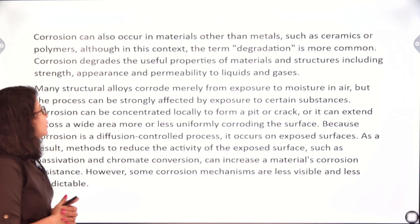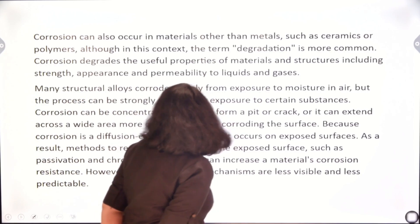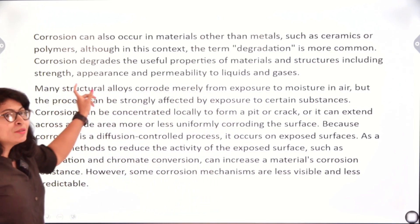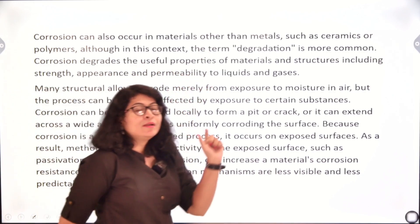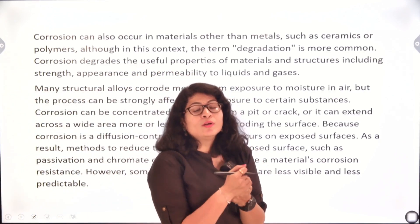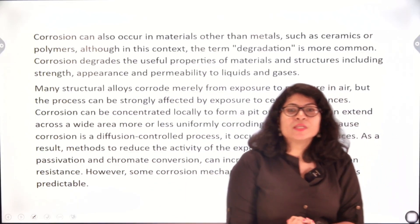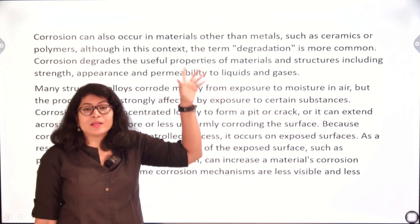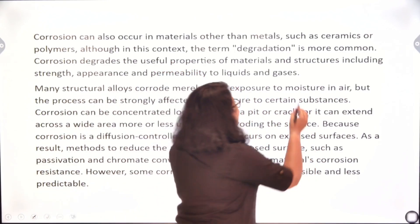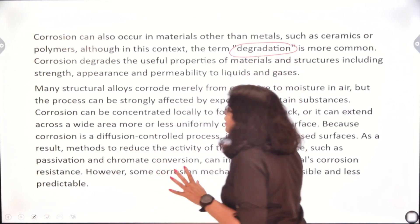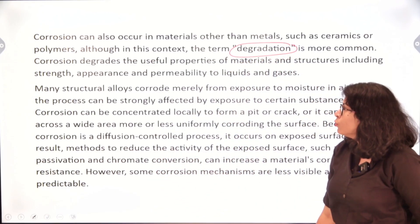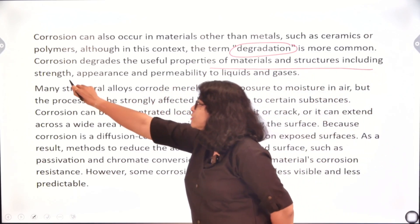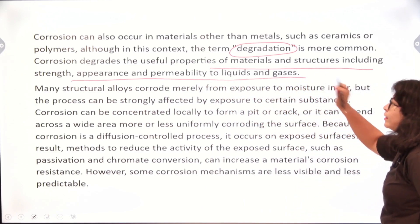Corrosion can also occur in materials other than metals, such as ceramics and polymers, although in this context the term 'degradation' is more common. When we say corrosion it mostly signifies metals; for ceramics or polymers we use the term degradation. Corrosion degrades the useful properties of materials and structures, including strength, appearance, and permeability to liquids and gases.